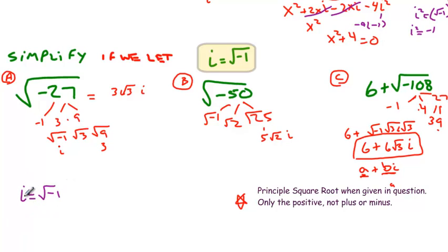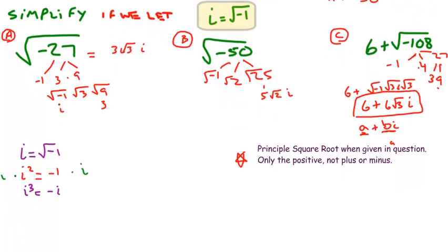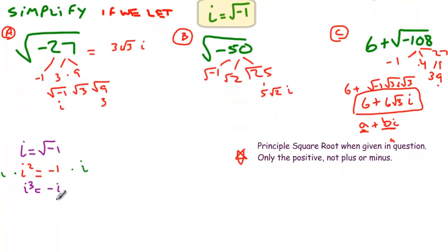For instance, if we multiply by i and i, in other words, squaring each side. As we saw before, we're going to get i squared is equal to negative one. If we actually multiply by an i on both sides, we're going to get now i cubed on one side. And negative one times i, or negative i on the other side. Neat little pattern coming out. If I multiply by i again on each side, you're going to see then we're going to get i to the fourth.